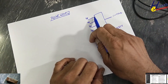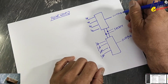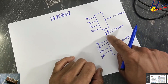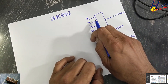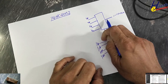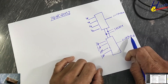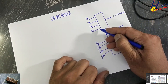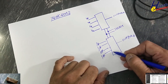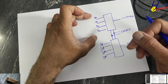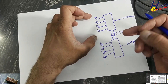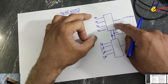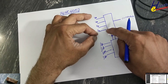If number one is selected, input number one will go to output A, and this input will reach output B. If we select number two, input number two will reach this output and number two will reach the other output. If we select number four via address selection, number four from here will reach this output and number four input will reach output B. When we have multiple inputs and need only one at a time at the output line, that is called a multiplexer.